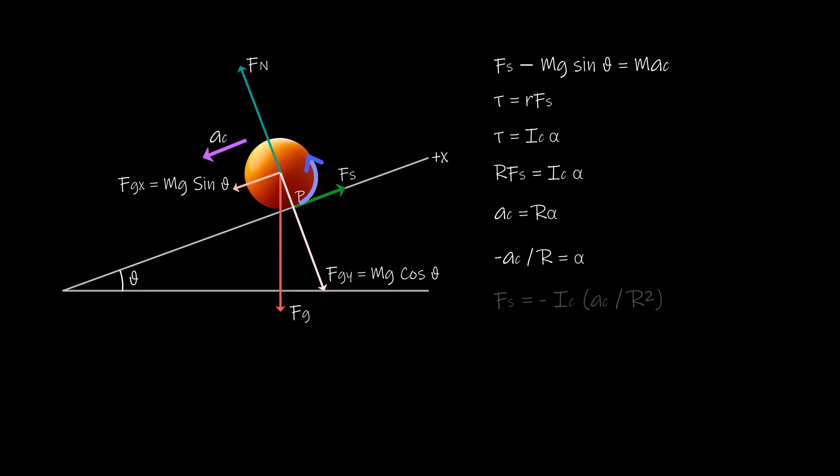FS then becomes FS equals minus I center of mass into A center of mass divided by R square. Putting this part of FS here we get A center of mass equals minus G sine theta divided by 1 plus I center of mass upon MR square. This then is the general equation we can use to find the linear acceleration of any body that is rolling down an incline that makes an angle theta with the horizontal.